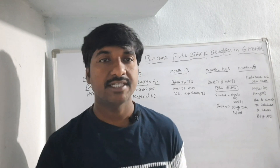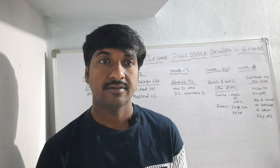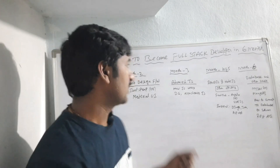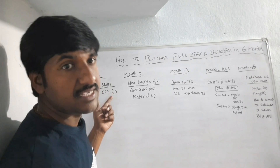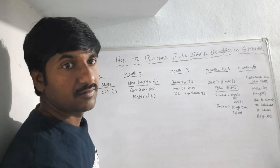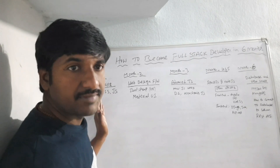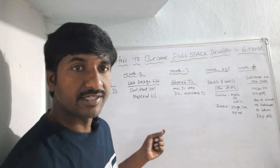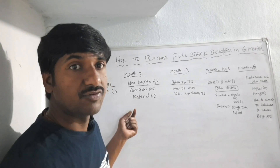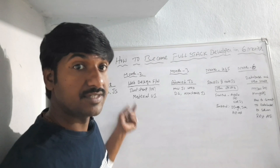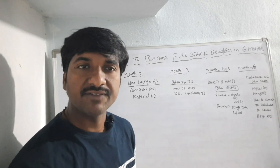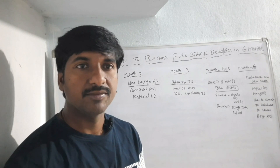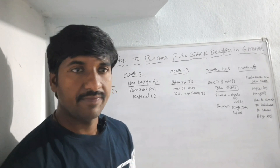Let us see how to become a full stack developer in six months — I'm going to explain what skills you have to learn monthly. In the first month, learn the basic skills: HTML, CSS, and JavaScript. HTML is used to create the structure of the website, CSS is used for styling, and JavaScript is used to create dynamic web applications. Also in the first month, learn DOM manipulation and responsive web design for practice.